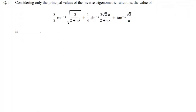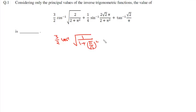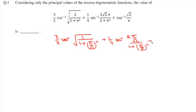Looking at all three expressions, we notice π/√2 appears in each of them. So we can factor this out and rewrite the expression as: (3/2) cos⁻¹ of 1/(1 + (π/√2)²) + (1/4) sin⁻¹ of 2(π/√2)/(1 + (π/√2)²).